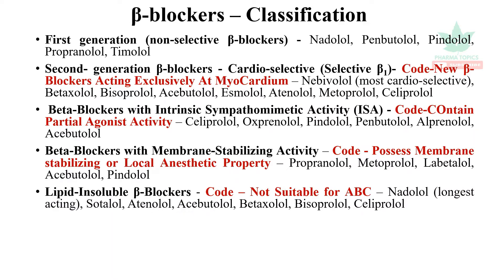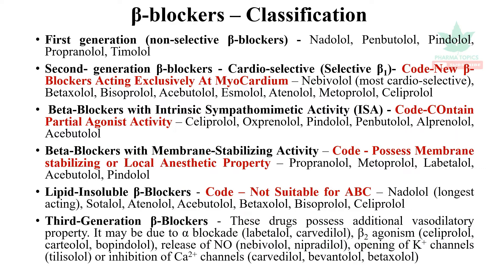Lipid insoluble beta blockers — remember the code: not suitable for ABC — nadolol is the longest acting drug; sotalol, atenolol, acebutolol, betaxolol, bisoprolol, and celiprolol. Third generation beta blockers have additional vasodilatory properties: additional alpha blockade such as labetalol and carvedilol; beta-2 agonism — celiprolol, carteolol, bopindolol; released nitric oxide — nebivolol, nipradilol; open potassium channels — tilisolol; or inhibition of calcium channels — carvedilol, amlodipine, and betaxolol.